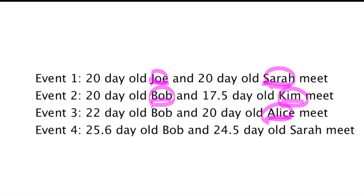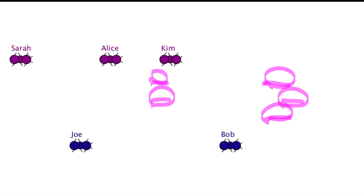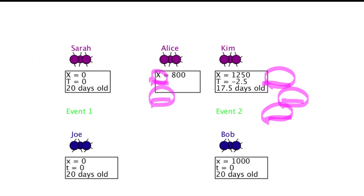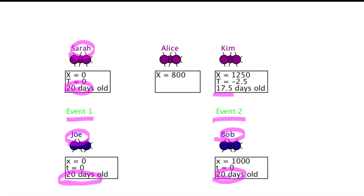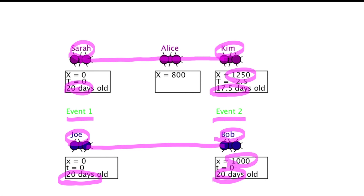So let's look at these four events and see how the girls will see the boys' meter sticks be short and their clocks run slow, while the boys will say precisely the same thing about the girls. We'll start from the boys' perspective, where it's the girls that are moving to the right at very high speed. The boys are twins — they're the same age — so events 1 and 2 happened at the same time for the boys. In other words, 20-day-old Joe meets 20-day-old Sarah, and 20-day-old Bob meets 17.5-day-old Kim. The girls claim the distance between Sarah and Kim is 1,250 kilometers, while the boys say the distance between them is only 1,000. Therefore, the boys see the girls' meter sticks are short.